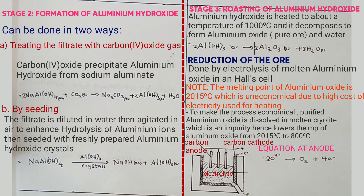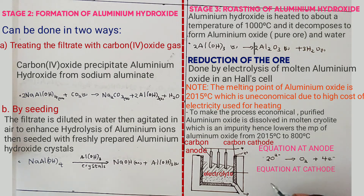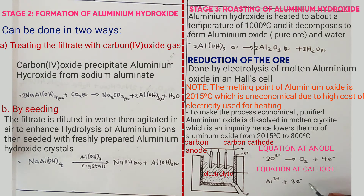The equation at the cathode: two ions migrate to the cathode, that is sodium ions and aluminium ions. Aluminium ions are preferentially discharged because they are lower in the electrochemical series and also because they are in higher concentration than sodium ions. The equation at the cathode is: Al³⁺ + 3e⁻ → Al(l).